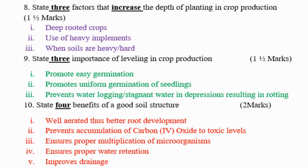Question number 9: State three importances of leveling in crop production. Number 1: promotes easy germination. Number 2: promotes uniform germination of the seedlings. Number 3: prevents water logging — it prevents stagnant water in depressions resulting in rotting.